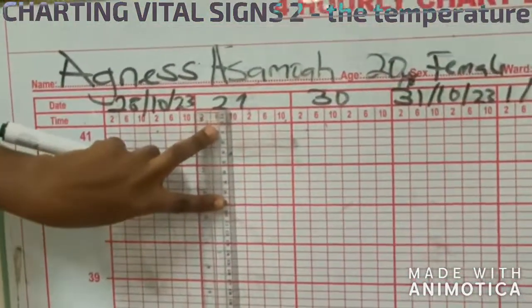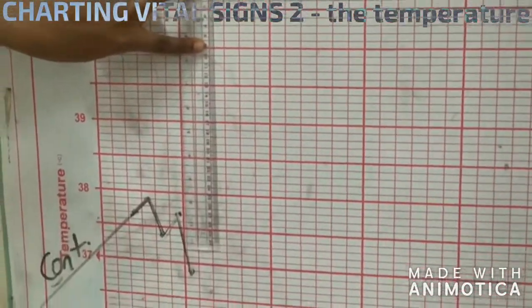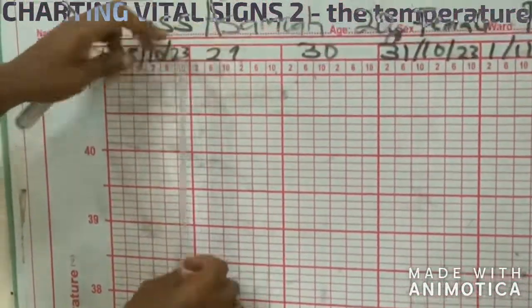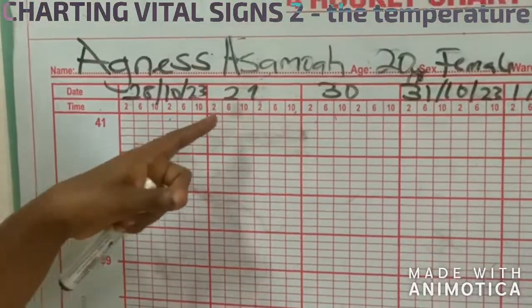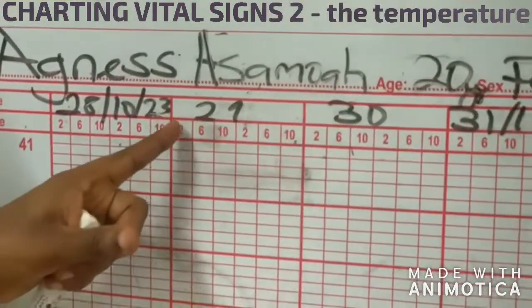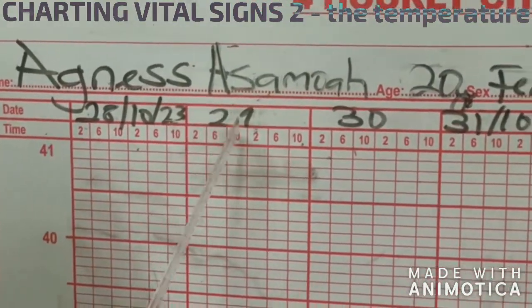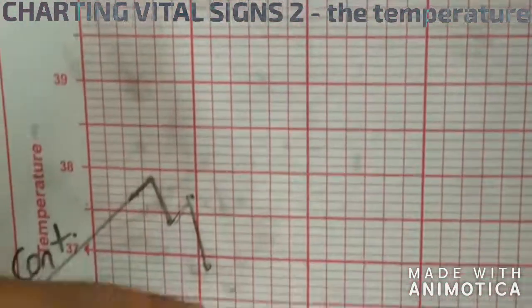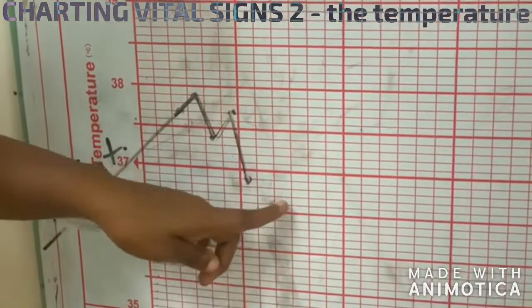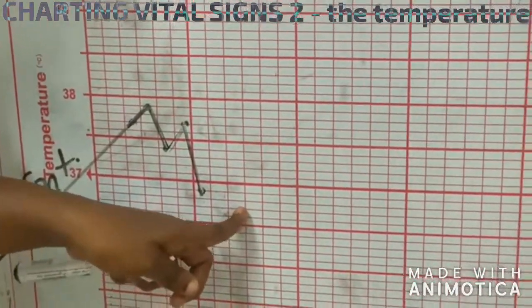With that, there's no way you are going to miss into another time. Another way too is that you can count. If it is 10 a.m., it means it is three spaces from the left: one, two, three. So when I'm coming to chart here, I just count three spaces: one, two, three. Then I'm at 10 a.m.